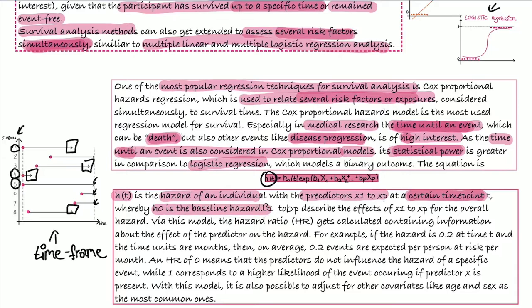Then we have b1 to bp which describe the effects of the predictors for the overall hazard. So if we calculate this we get the hazard ratio, and this contains information about the effect of the predictor on the hazard.